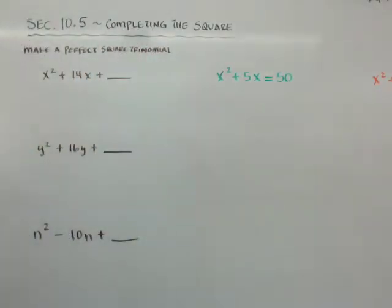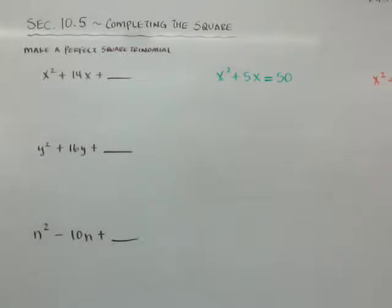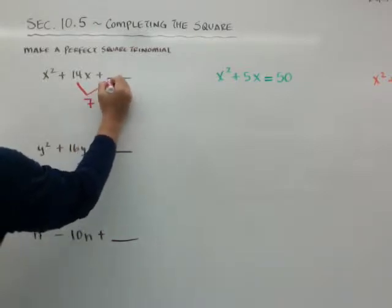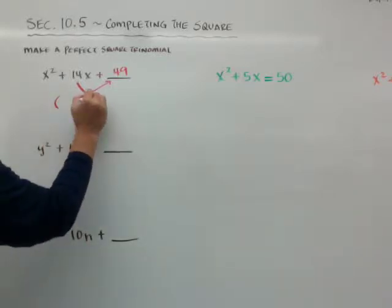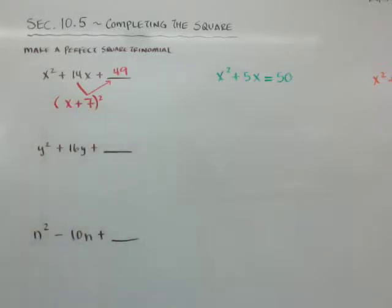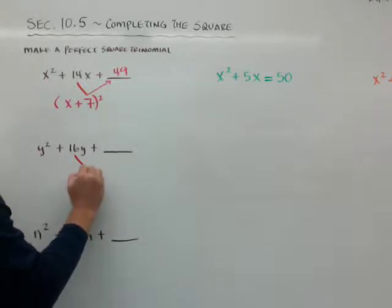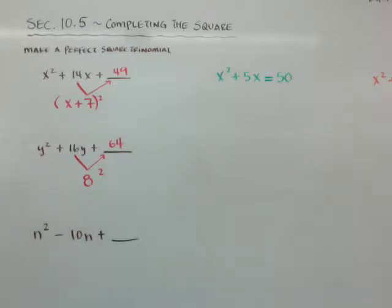First, you need to know how to fill in the last number C to make a perfect square trinomial. A simple way is to take B, half it to 7, and then square it to make 49. So you half B and square it, and put it in C. When you complete the square, it looks like x plus 7 quantity squared — that's your perfect square trinomial. Another quick one: half it to 8, square it to 64, and 64 makes this a perfect square trinomial.